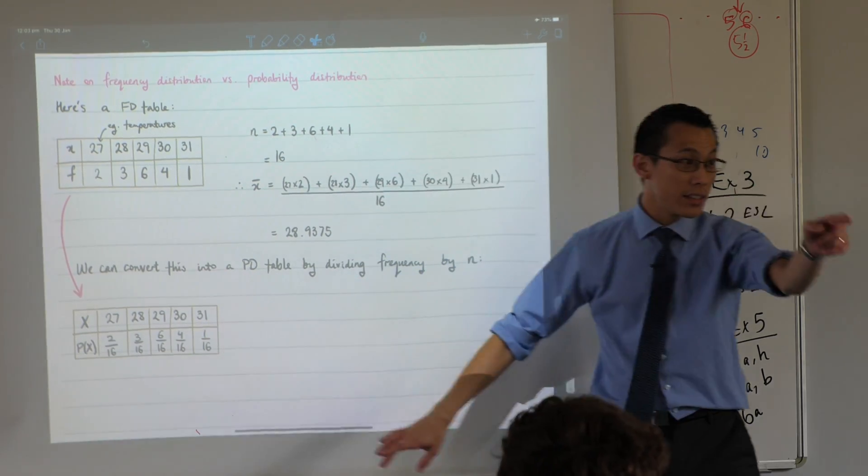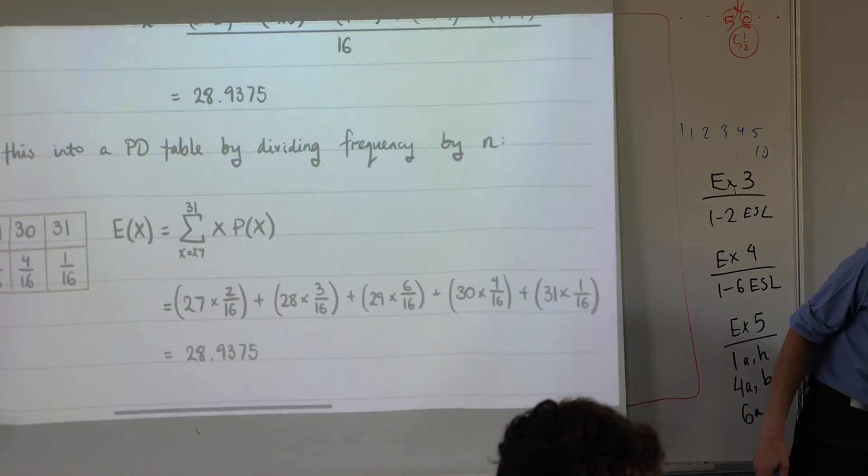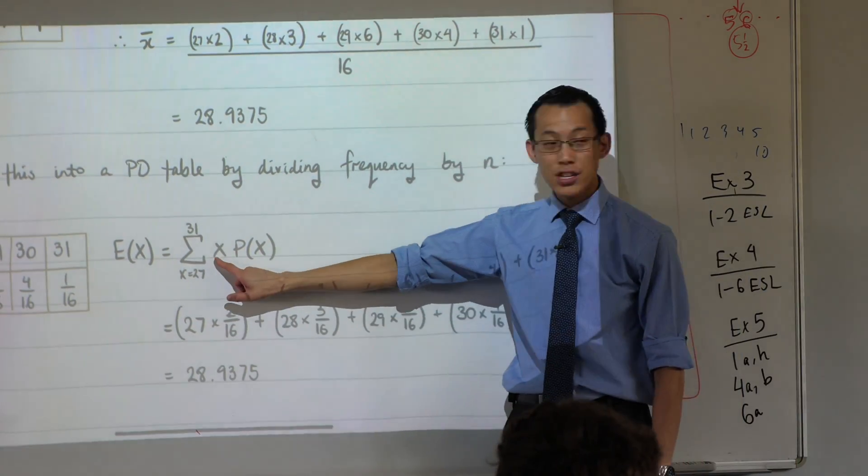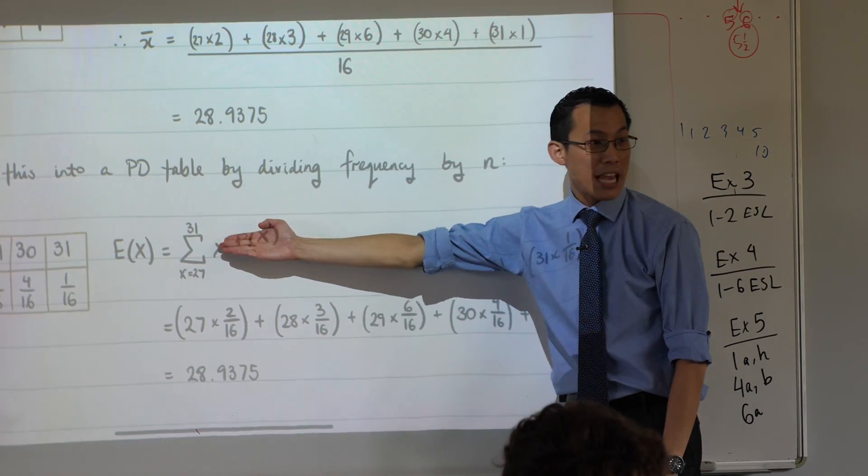Do you remember that? Now how do you do it? Well this is how. What you do is you take each value temperature and you multiply it by its probability and then you just add them all up. Remember that sigma notation?